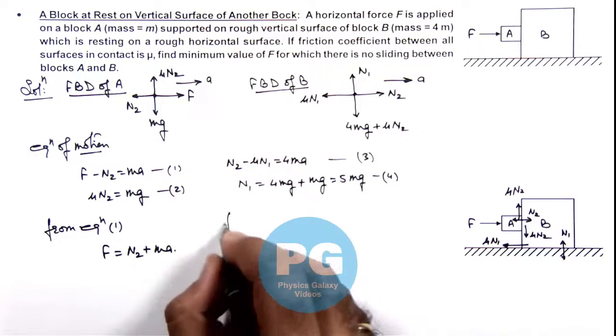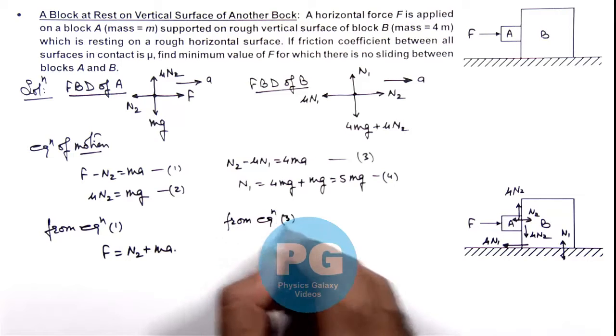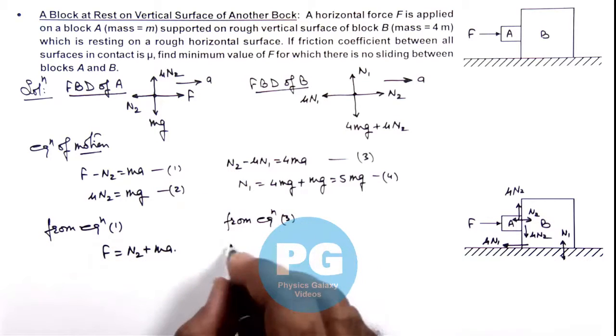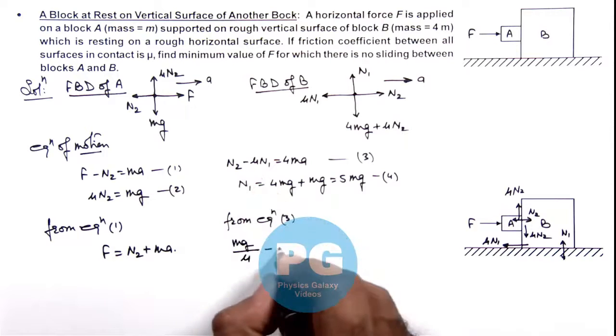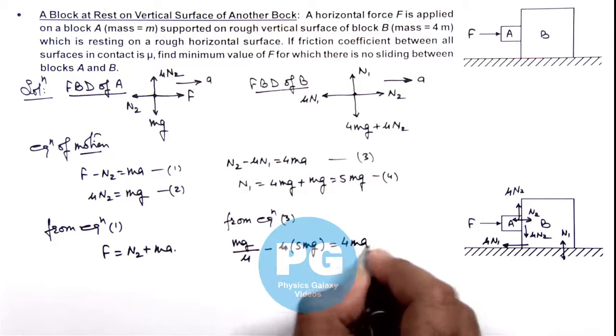So here we can write from equation 3 the value of N₂ I can substitute as mg/μ - μ times N₁ value is given as 5mg is equal to 4 times ma.